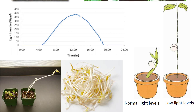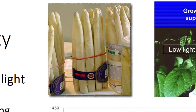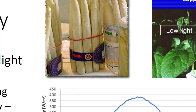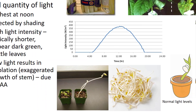Here are some edible tidbits. Bean sprouts and white asparagus are grown in the dark. White asparagus is actually buried so light doesn't hit the spears and green them up. Unlike asparagus, bean sprouts are covered or kept in the dark when they are planted.